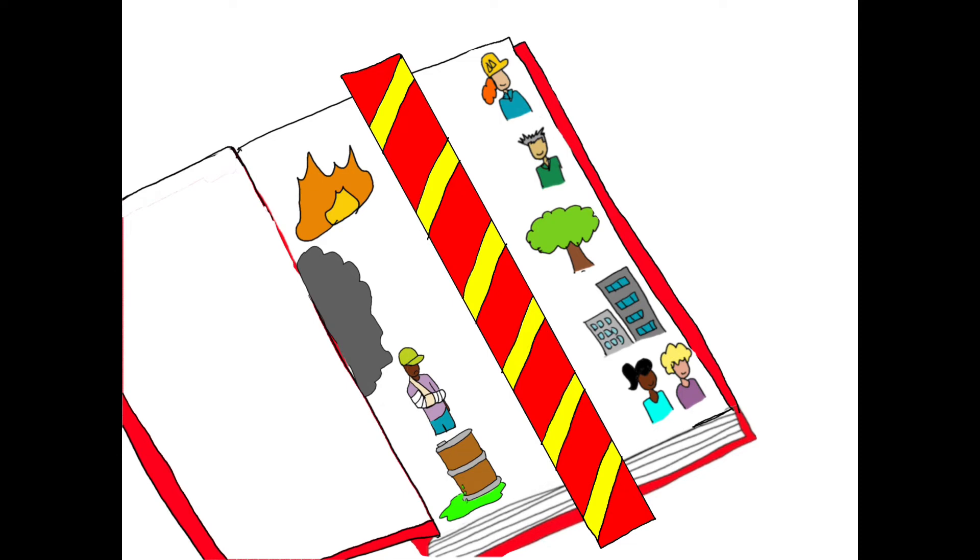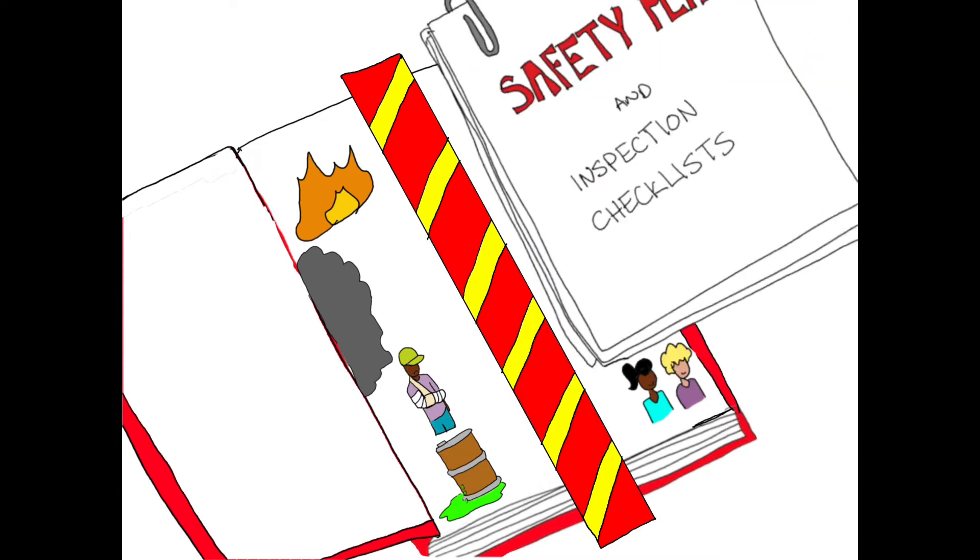It must be written down, communicated, and practical. Let's look at the four key elements in an HSSE management system, starting with the HSSE plan and inspection checklists.